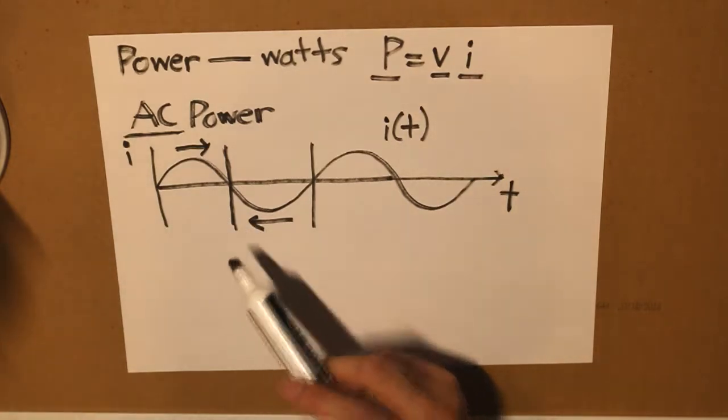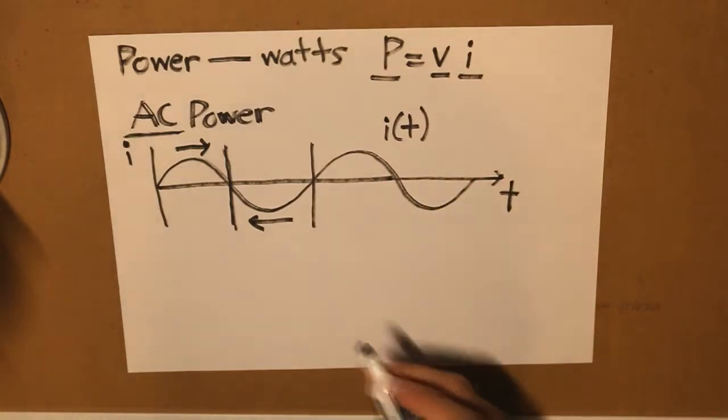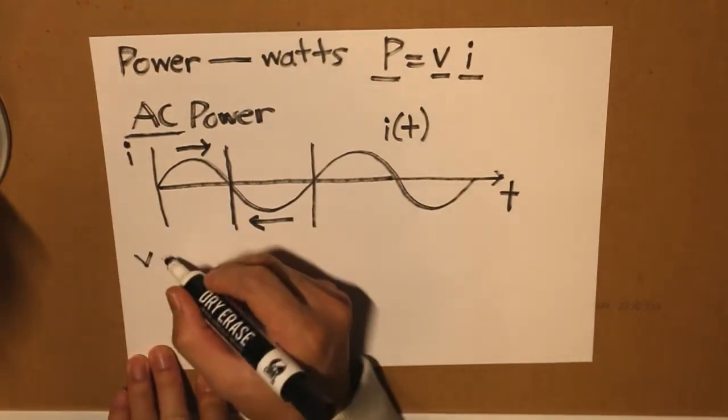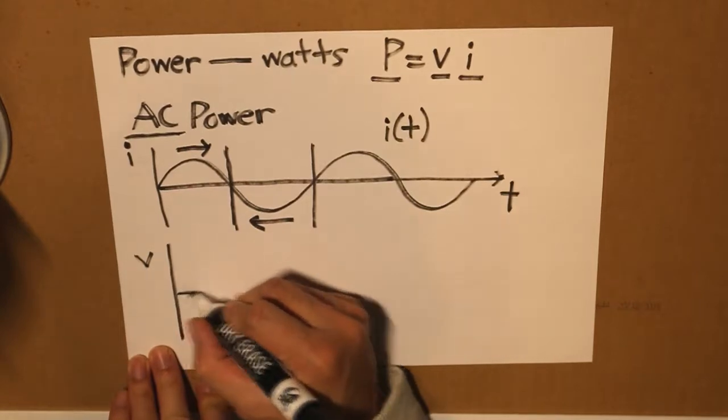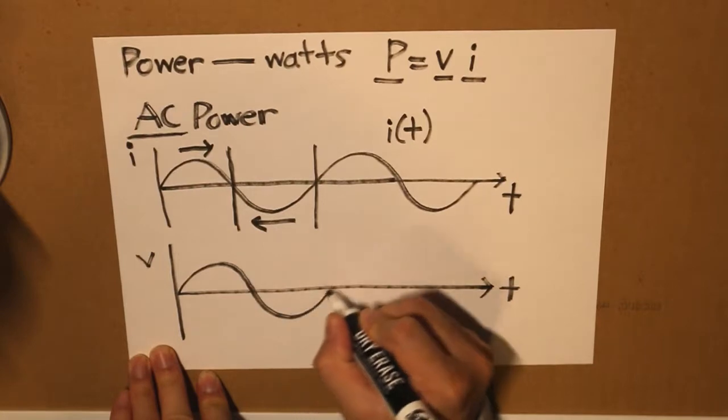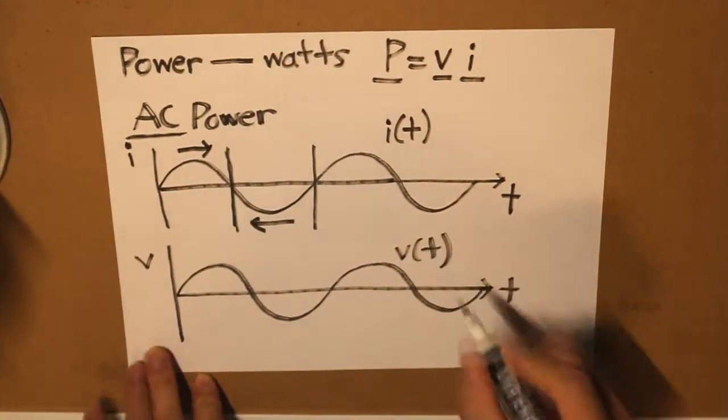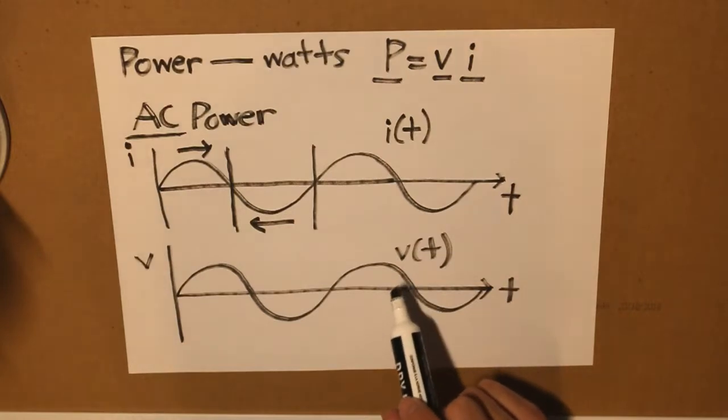So now that we've defined what our current waveform is, then our voltage would also be different, and our voltage would have its own voltage waveform.